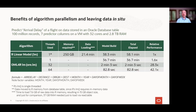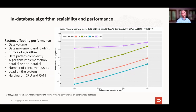Our VM has 32 cores and 2.8 terabytes of RAM. Loading 7.6 gigabytes of data took about 21 minutes; building the lm model single-threaded took 38 minutes — total 58 minutes for the first model. Using OML4R models where the data exists in the database, even single-threaded, we see a 1.6x performance improvement because we didn't move data. Increasing to 64 threads brings the time down to 1.3 minutes — a 42x performance improvement.